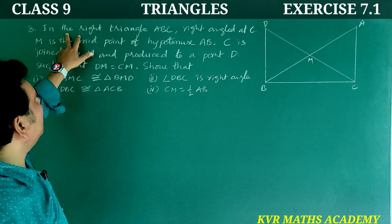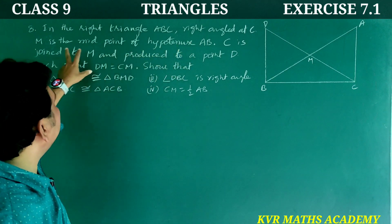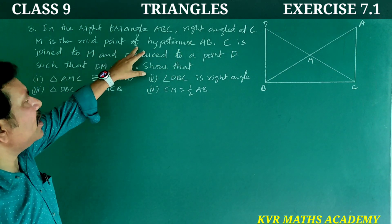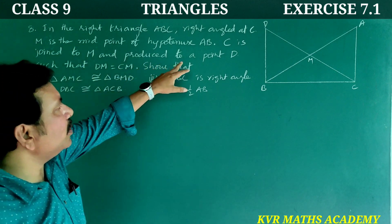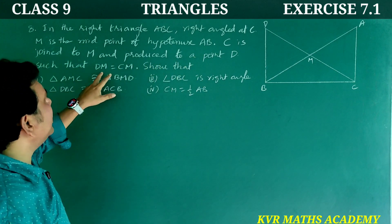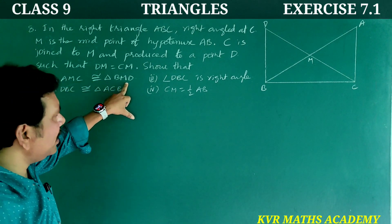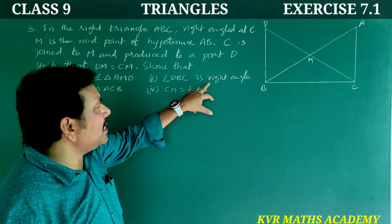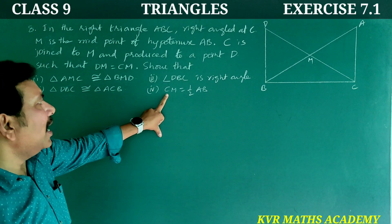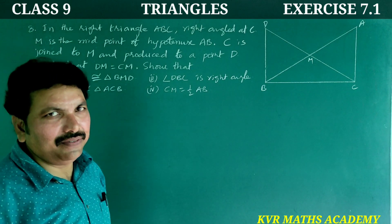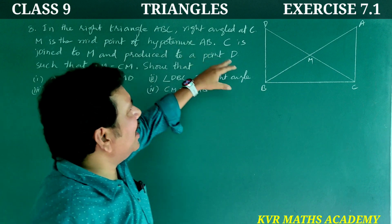Eighth question — the final question in this exercise. In right triangle ABC, right angle at C, M is the midpoint of hypotenuse AB. C is joined to M and produced to a point D such that DM is equal to CM.